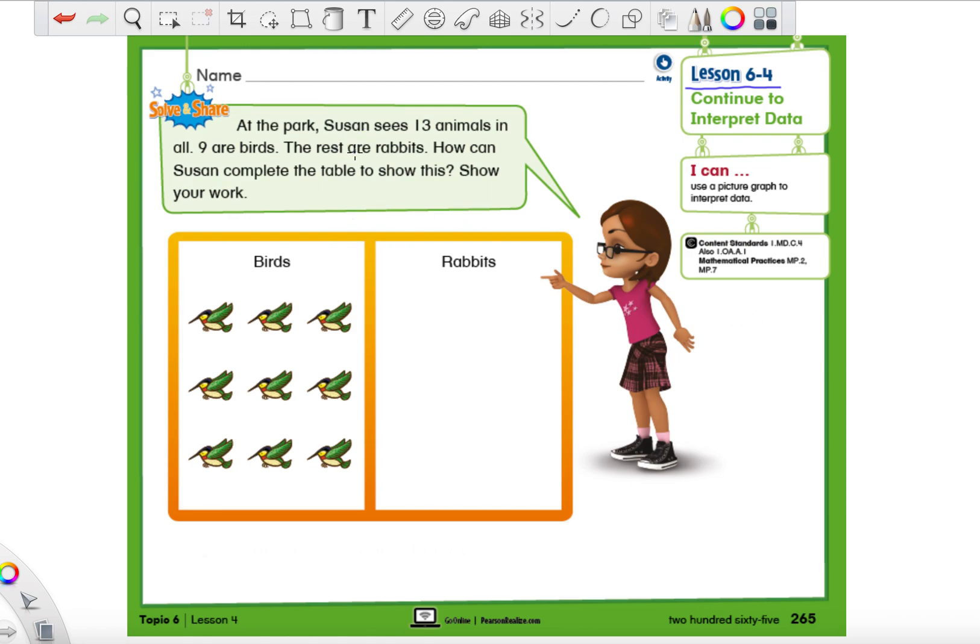So we have a little story problem and let's read it first and see what we're dealing with here. And as we read, of course, like always, we will circle the important parts. At the park, Susan sees 13 animals. So circle 13. They're giving us a number. There's a reason they're doing that. So we circle it. So there's 13 animals in all.